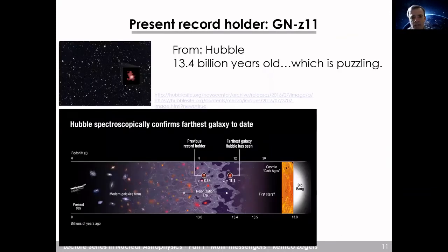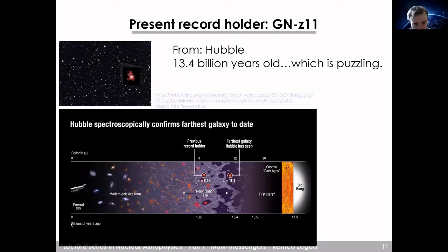The current record holder for the most distant observed galaxy is called GN-z11, imaged by Hubble. It's about 13.4 billion years old, which is surprising given that we think the universe is only about 13.8 billion years old — meaning this galaxy formed very quickly after the Big Bang. This timeline shows the previous record holder as well, illustrating how close to the Big Bang we can now observe.